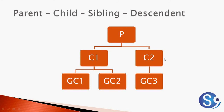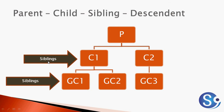A parent P has children C1 and C2. C1 has children GC1 and GC2, and C2 has the child GC3. C1 and C2 are siblings. GC1 and GC2 are siblings, but GC2 and GC3 are not siblings because they have different parents. For siblings, the parents must be the same.